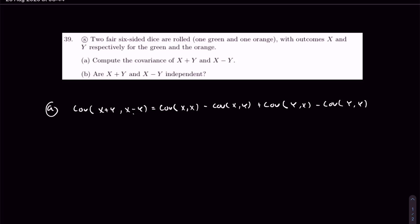The covariance with itself is just the variance. This is variance of X, this is variance of Y.